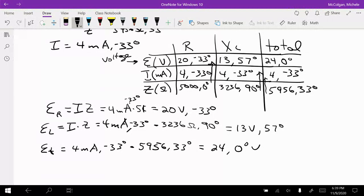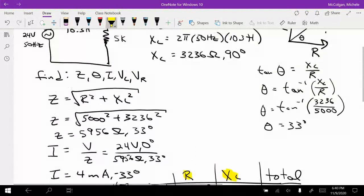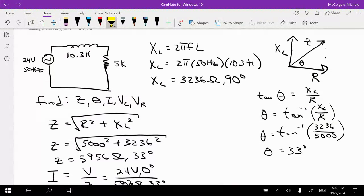And so that's how I can find the voltage value, the voltage drops across each of my components, my resistor and my inductor. And I can just double check to make sure that it works. The total voltage should be the same as my source voltage that I'm given in the problem here.